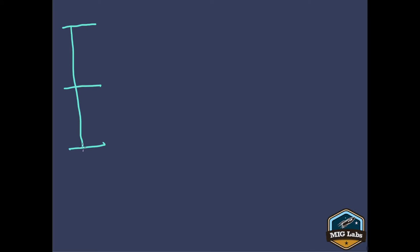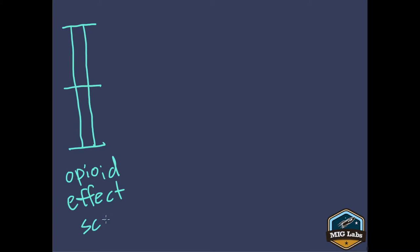Let's draw a sort of imaginary scale — there isn't an actual scale like this in your body. We'll call this the opioid effect scale. Here's zero percent right in the middle. Most people are hanging out at zero most of the time since most people don't have opioids in their system.